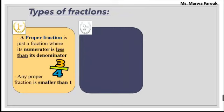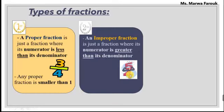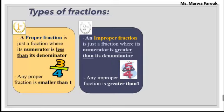The second type we have is the improper fraction. For this fraction, we have the opposite — the numerator is greater than the denominator. As you can see here, the numerator is five and the denominator is four, and five is greater than four. When the numerator is greater than the denominator, it's called an improper fraction. And any improper fraction is greater than one. So the proper fraction is smaller than one, and the improper fraction is greater than one.